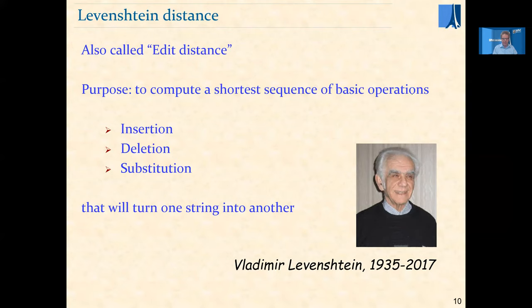There are some variants to this problem. For example, the Levenshtein-Damereau distance, which adds a swap operation — you can swap two characters. You could also, instead of having every operation cost one, assign different costs to different operations. It's a good exercise after taking this lecture to try and adapt the algorithm to one of these variants.